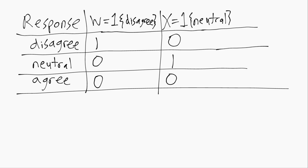And you can do the same thing for another variable if we wanted a dummy for the agree category. And this is helpful because now instead of having words like disagree and neutral and agree, we have numbers.